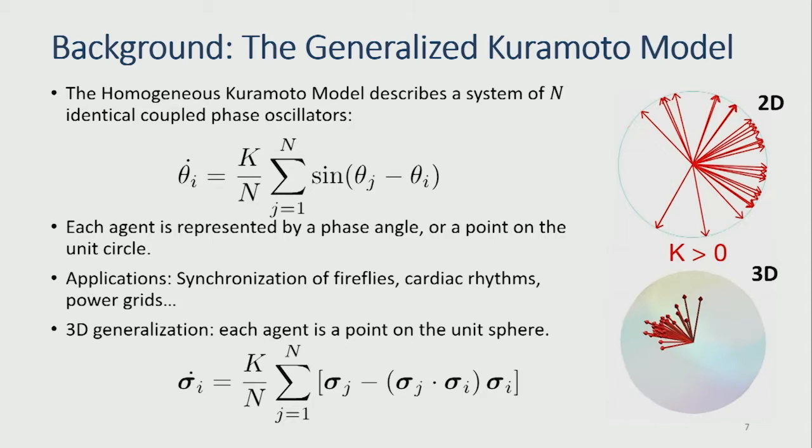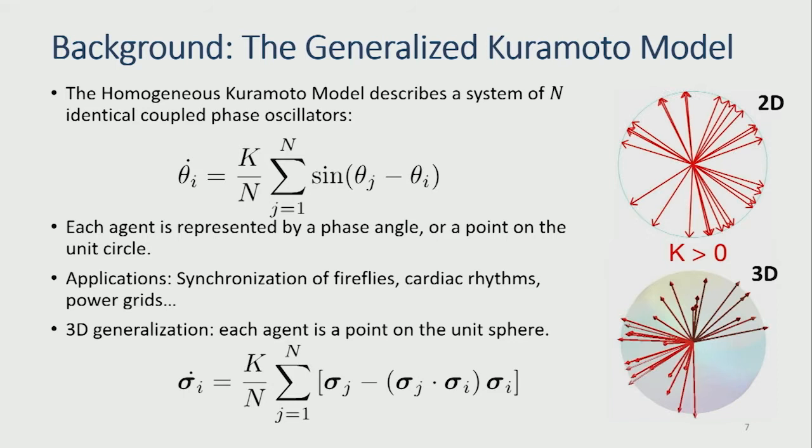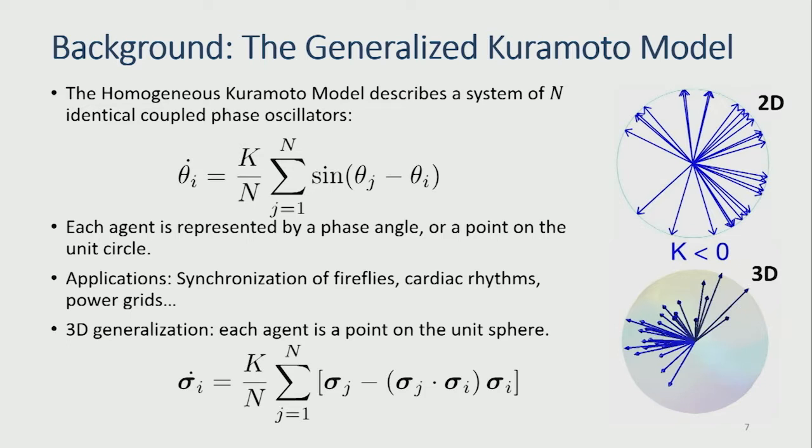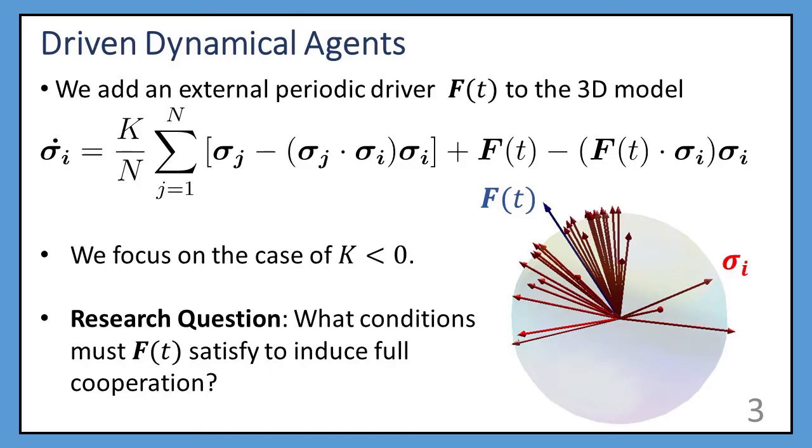And so we worked with the three-dimensional case of this higher dimensional system, focusing on the case where these K values are negative, which means that agents naturally want to spread out. So you can see here when K is positive, the agents are attracting each other, but when you make this K value negative, the agents spread out over the surface of this sphere. So if you look at this picture here, you see that the agents naturally on their own want to spread out.